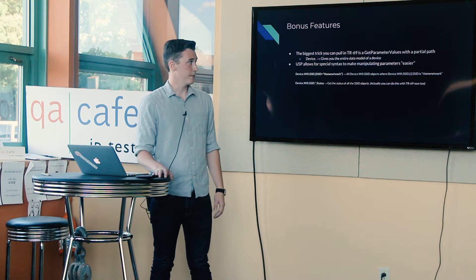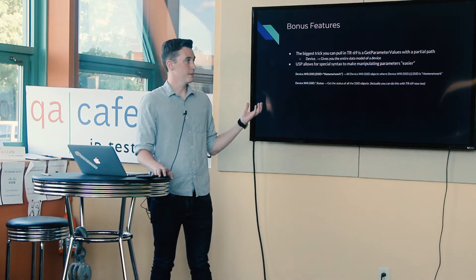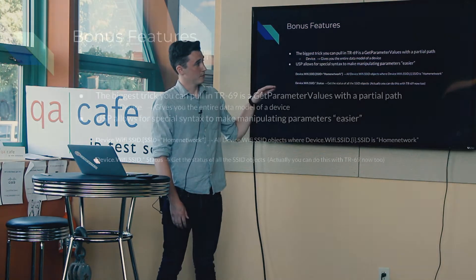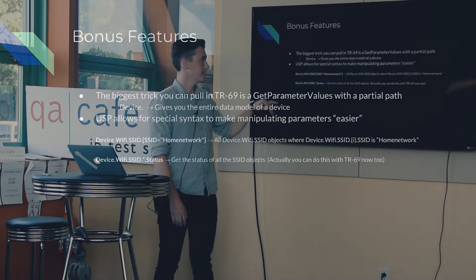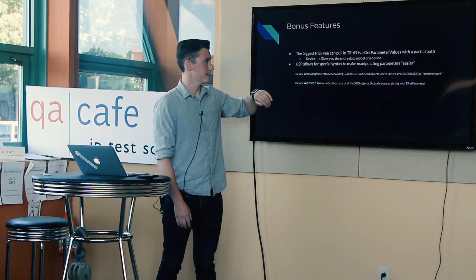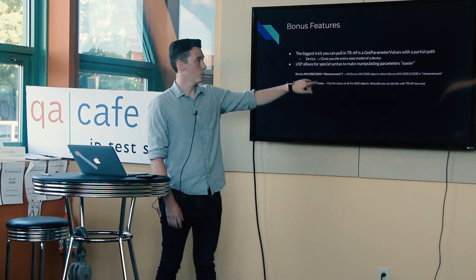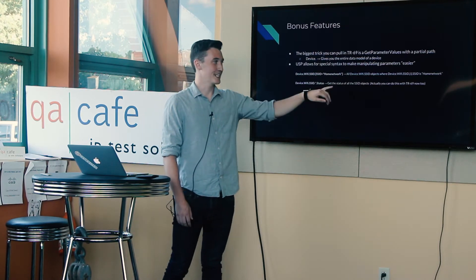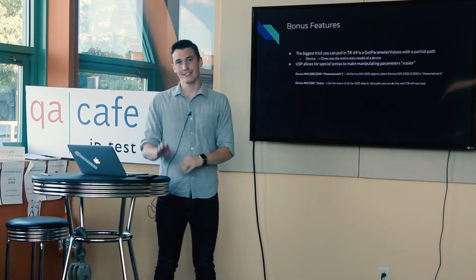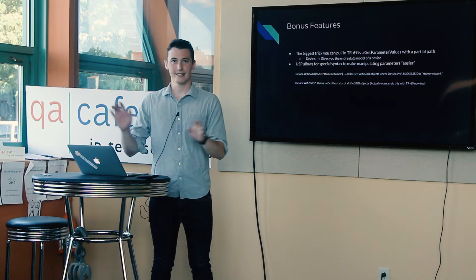The last USP feature I want to touch on is bonus path expression features. With TR69 you can use partial paths in gets and Get Parameter Names to retrieve all data model content under that path. USP goes further — you can say get me all SSID instances where the SSID is 'home network,' and it also supports wildcards so you can say give me the statuses of all your SSIDs.